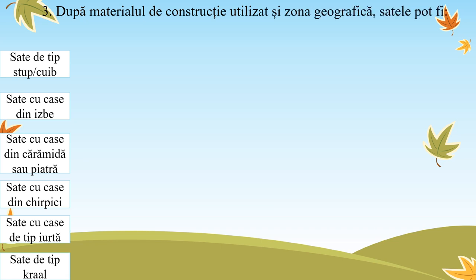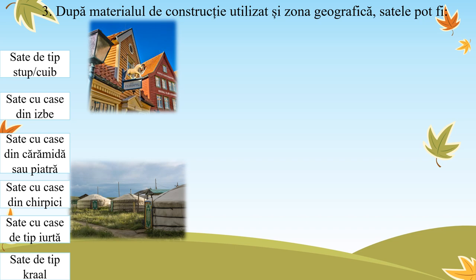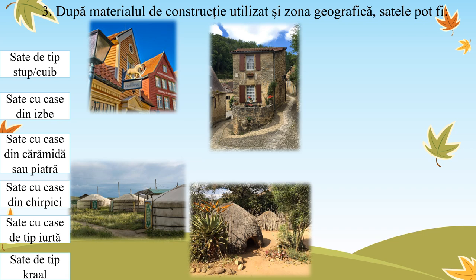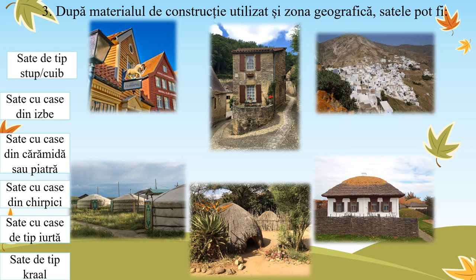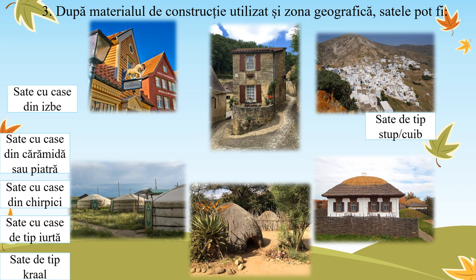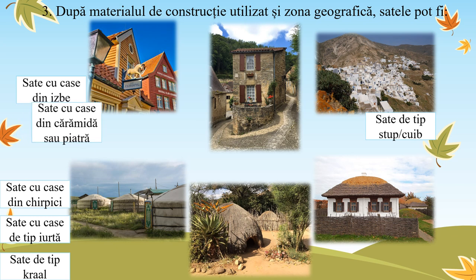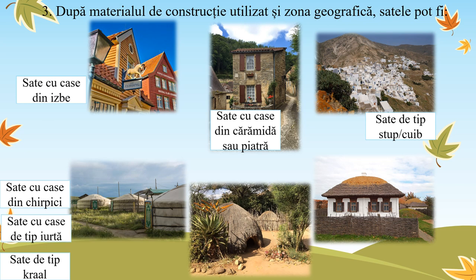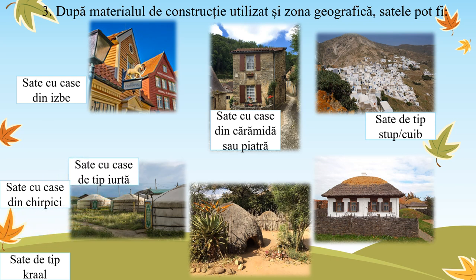După materialul de construcție utilizat și zona geografică, satele pot fi: sate de tip stup sau cuib, specifice zonei mediteraneene, din piatră; sate cu case din izme, formate din bârne de lemn, specifice Europei nordice și Rusiei; sate cu case din cărămidă sau piatră, specifice Europei vestice și altor regiuni de pe glob; sate cu case de tip iurtă, de formă rotundă, acoperite cu pâslă, specifice Mongoliei.